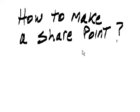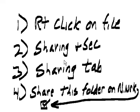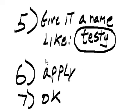How do you make a SharePoint? Right-click on the file, go to Sharing and Security. Choose the Sharing tab and click 'Share this folder on the network.' Give it a name like 'testy', then click Apply and OK. Now you have a SharePoint.